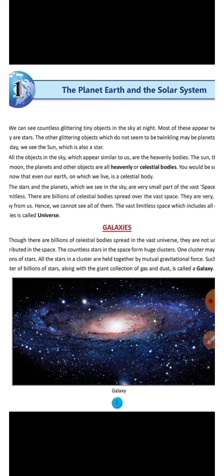First of all, there come galaxies. There are billions of celestial bodies spread in the vast universe. They are not uniformly distributed in space — countless stars in space exist in their own groups, forming clusters. One cluster contains billions of stars. And all the stars in a cluster are held together by mutual gravitational force.